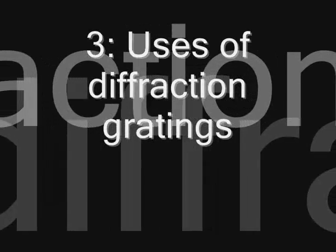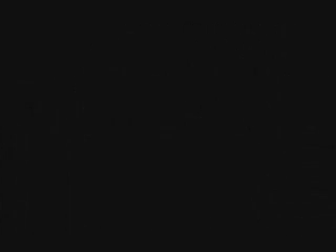Diffraction gratings spread out monochromatic light and produce interference patterns of light and dark.